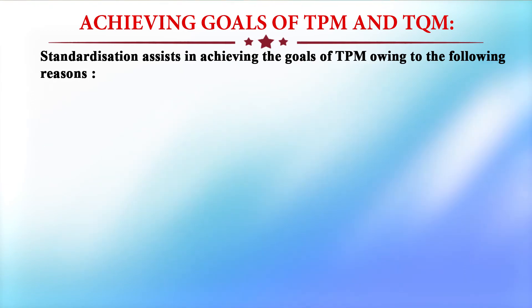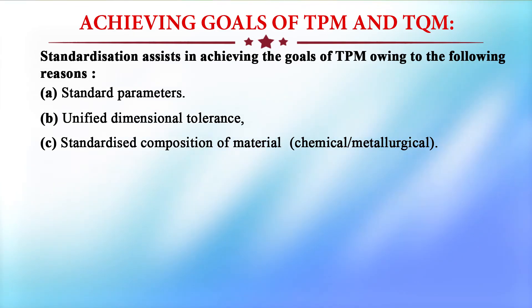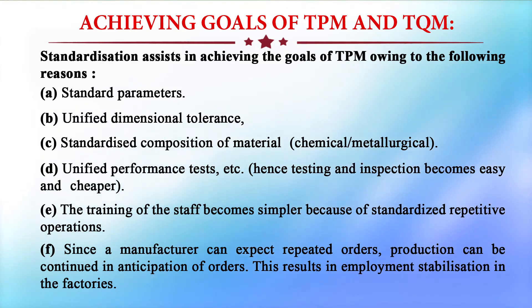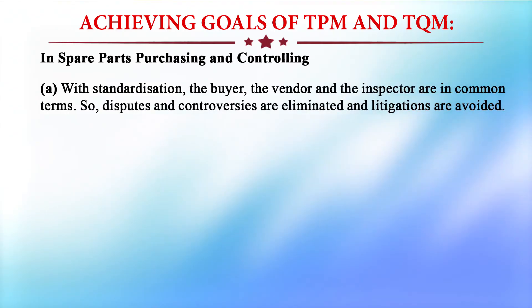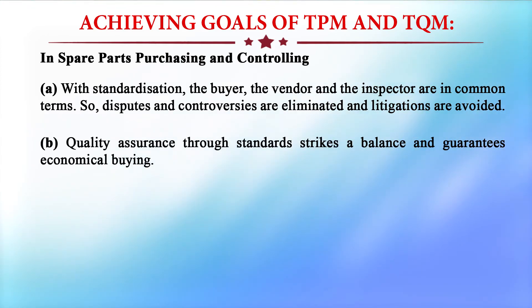Standardization assists in achieving the goals of Total Productive Maintenance (TPM) and Total Quality Management (TQM) through standard parameters, unified dimensional tolerance, standardized composition of materials, chemicals or metallurgy, and unified performance tests. Training of staff becomes simpler because of standardized repetitive operations. Since a manufacturer can expect repeated orders, production can be continued in anticipation of orders, resulting in employment stabilization. With standardization, the buyer, vendor, and inspector are in common terms — disputes and controversies are eliminated and litigations are avoided. Quality assurance through standards strikes a balance and guarantees economical buying.